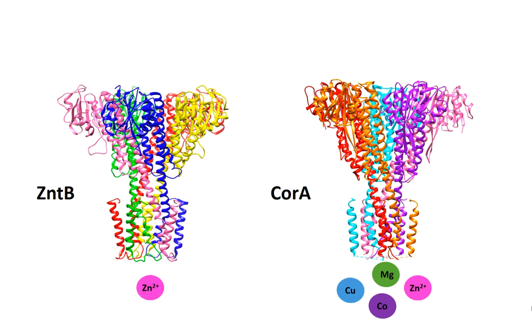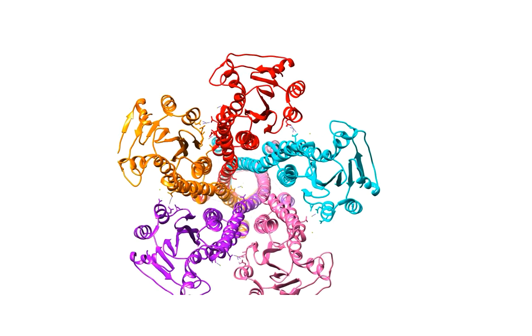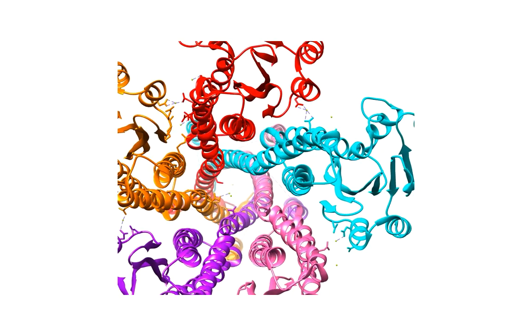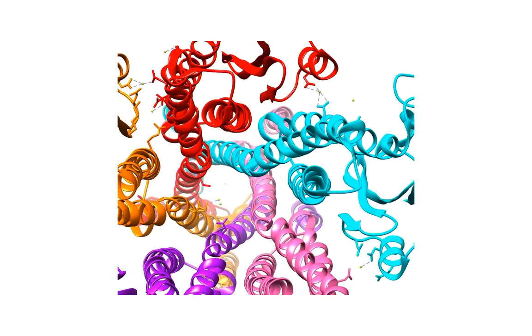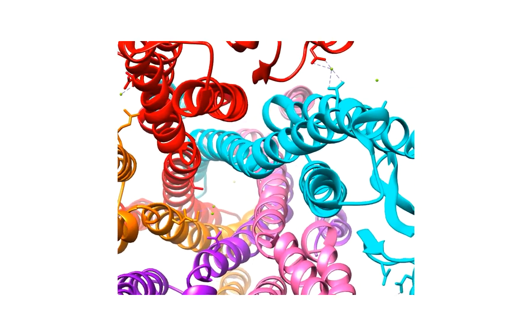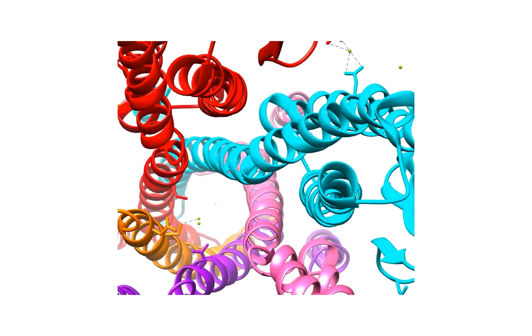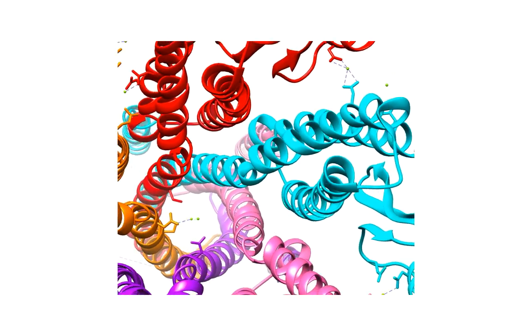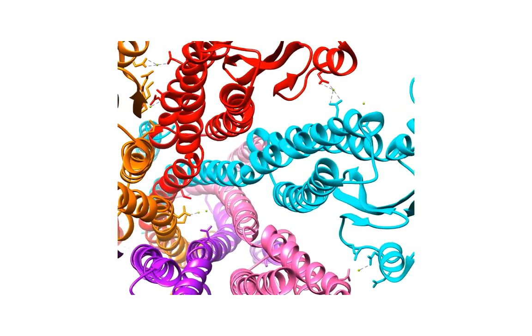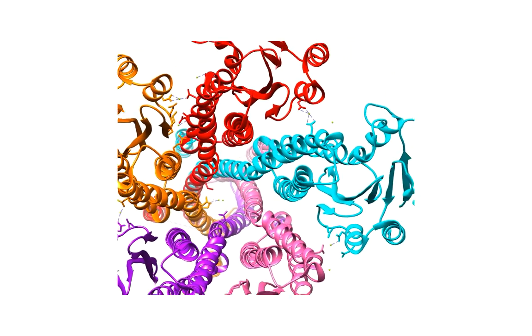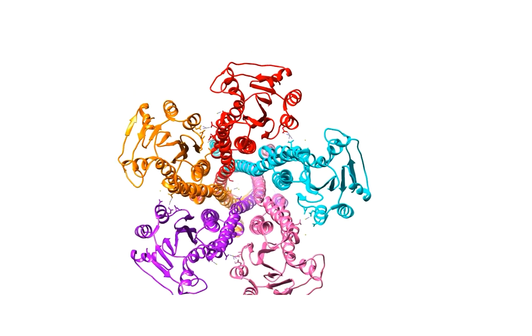CorA proteins also have identified metal binding sites, whereas ZntB does not, indicating a different transport mechanism. On this CorA protein, you see the magnesium is bound in a number of locations. For transport in or out of the cell, however, magnesium does need to be bound in the pore.